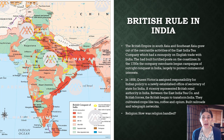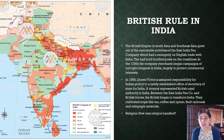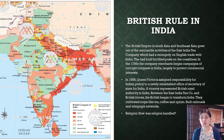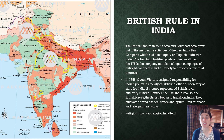British rule in India: The British empire in South Asia and Southeast Asia grew out of the mercantile activities of the East India Tea Company, which had a monopoly on English trade in India. They built fortified posts on the coastline, and in the 1750s the company's merchants began campaigns of outright conquest in India, largely to protect commercial interests. This is powerful corporations going in and actually trying to take over vast parts of the country. In 1858, Queen Victoria assigned responsibility for Indian policy to a newly established office of the Secretary of State for India. A viceroy represented British royal authority in India. Between the East India Tea Company and British forces, the British began to transform India. They cultivated crops like tea, coffee, and opium.